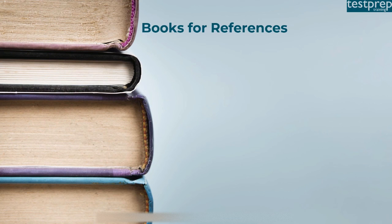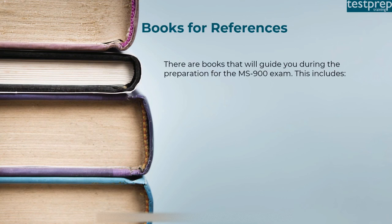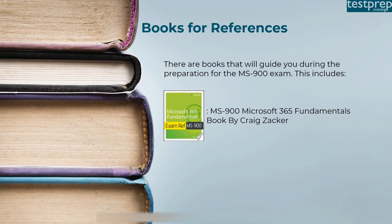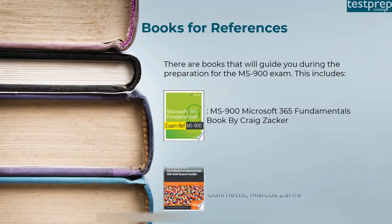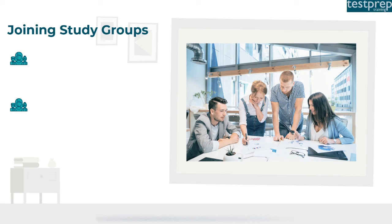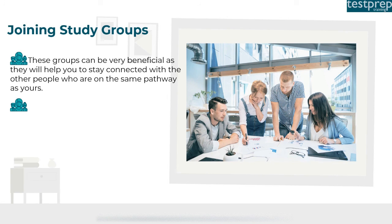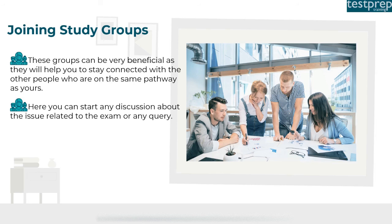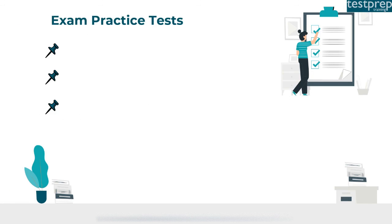Fourth, books for references: those dedicated to passing the exam should use books during preparation. Recommended titles include 'MS-900 Microsoft 365 Fundamentals' by Craig Zacker, and 'Microsoft 365 Certified Fundamentals MS-900 Exam Guide' by Aaron Gilmet and Marcos Zonier. Fifth, joining study groups: these groups help you stay connected with others on the same pathway, allowing discussions about exam issues and queries.